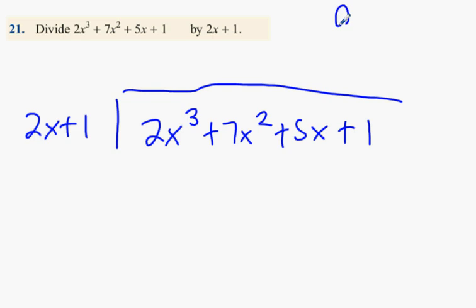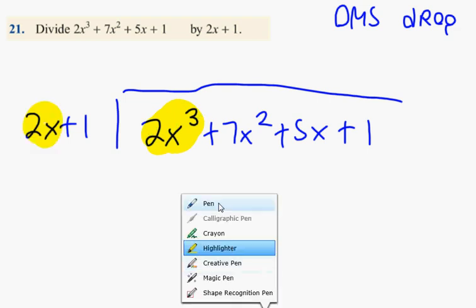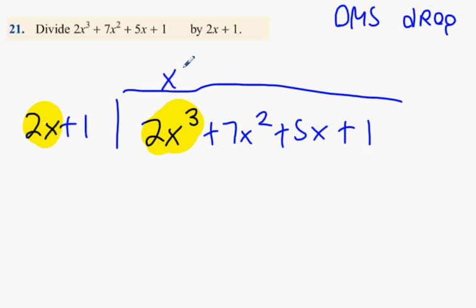Once again, DMS drop. Every time. We're not going to do it twice this time. I think we're going to have to do it 3 times. Let's find out. Step 1. Division. This one divided by this one. How many? x squared. Excellent.